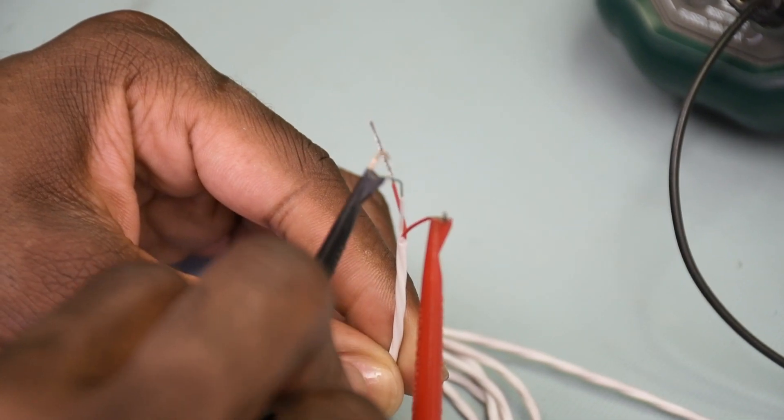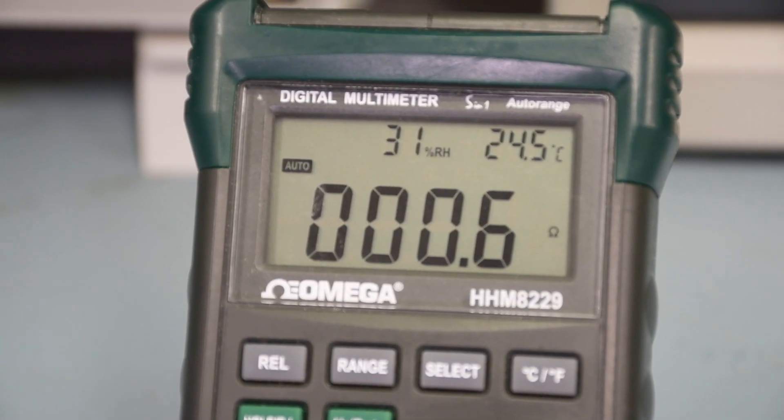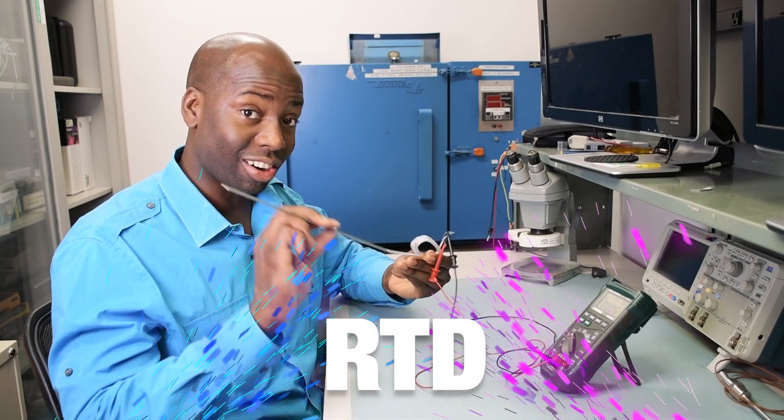Now, if this is an RTD, across two pairs of wires, you're going to read a zero ohm resistance. So, I'm going to take my negative lead and move it over to the other wire, and I'm reading 0.6 ohms, which is pretty much next to zero. This is fair to say, this is a three-wire RTD.